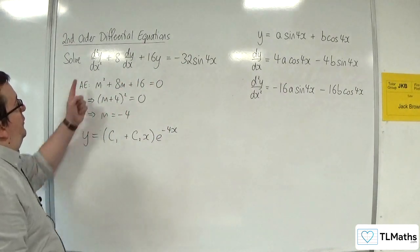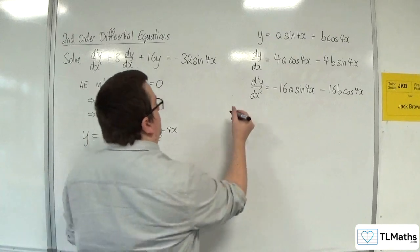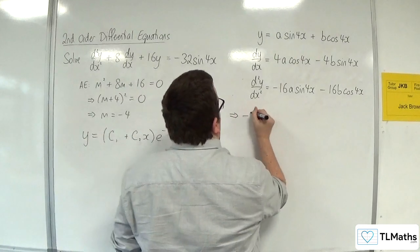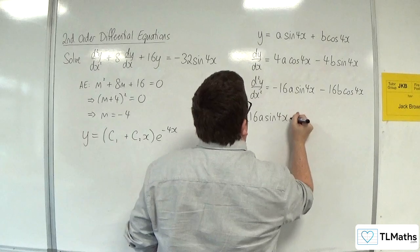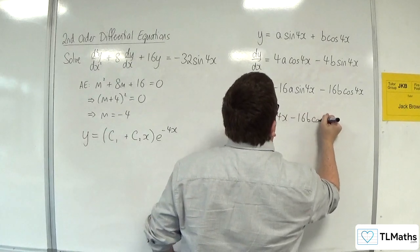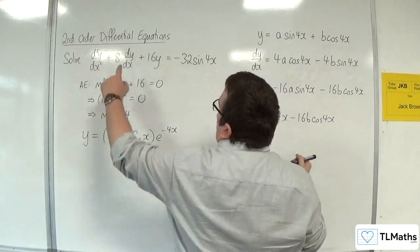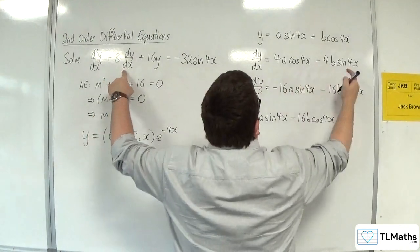So now substituting in, we've got the -16a sin(4x) - 16b cos(4x) plus 8 lots of dy/dx.